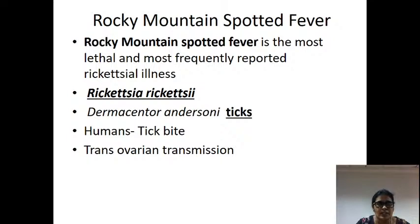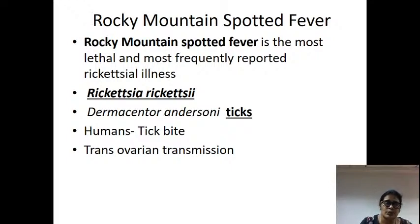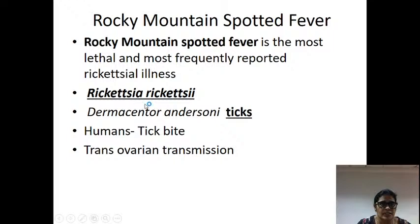Transovarial transmission means it is not only the parent that is affected — the bacteria spreads even to the next generations, to their offspring. The bacteria passes generation to generation. The causative agent Rickettsia rickettsii is transmitted by the tick Dermacentor. The rash in Rocky Mountain spotted fever spreads from the extremities to the trunk — centripetal distribution.